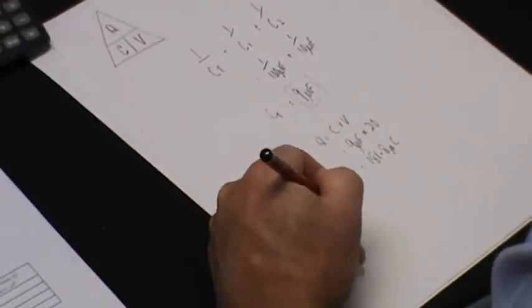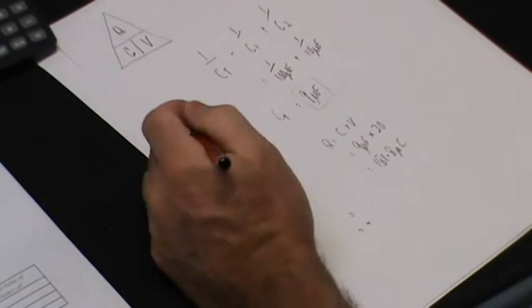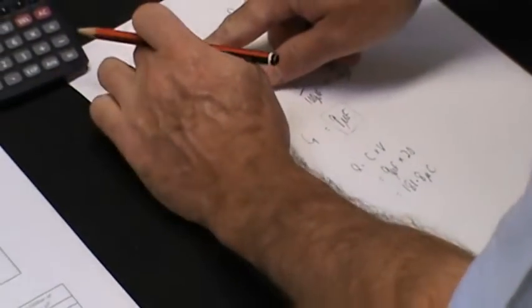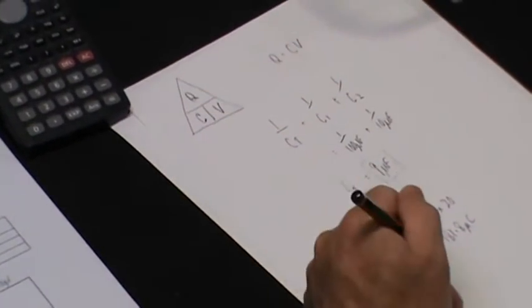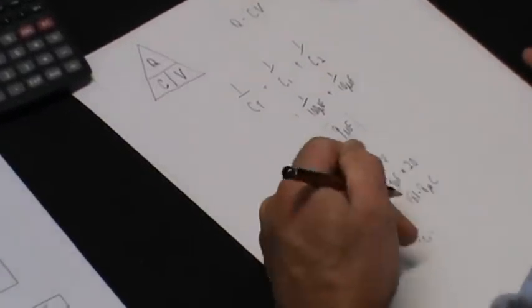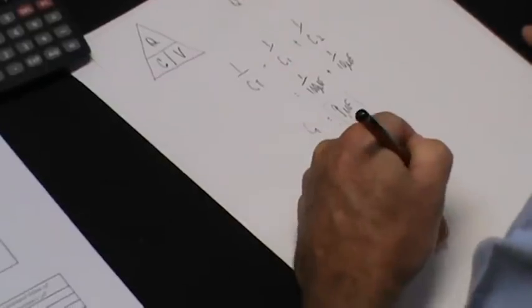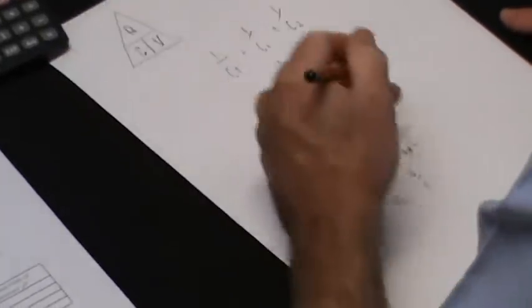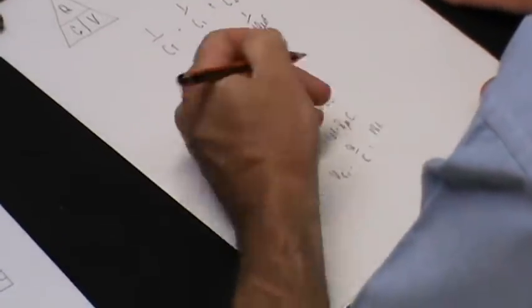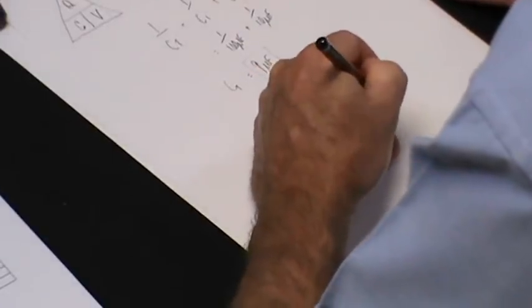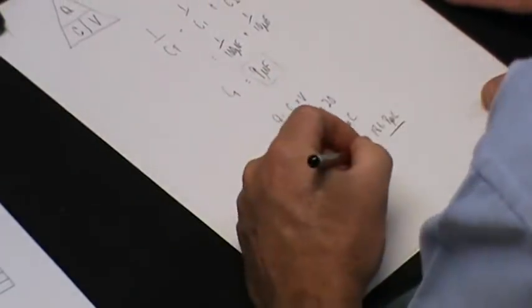Therefore, the voltage across each capacitor using this formula again, V equals Q divided by C. Therefore, the voltage across C1, VC1, equals Q divided by C, which equals 181.8 microcoulombs divided by the capacitance.